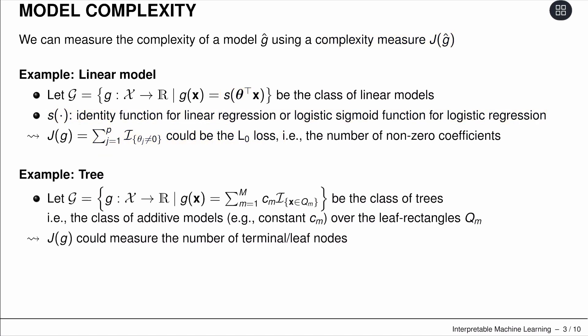You could do the same thing with trees—a definition of how to build trees. J could simply measure the number of terminal or leaf nodes.